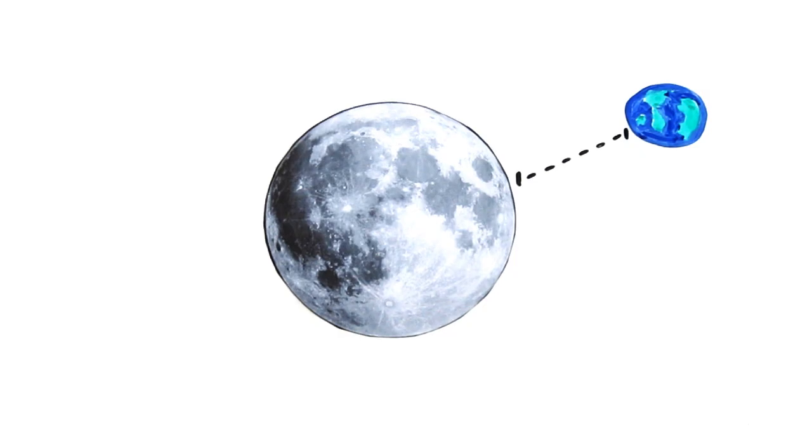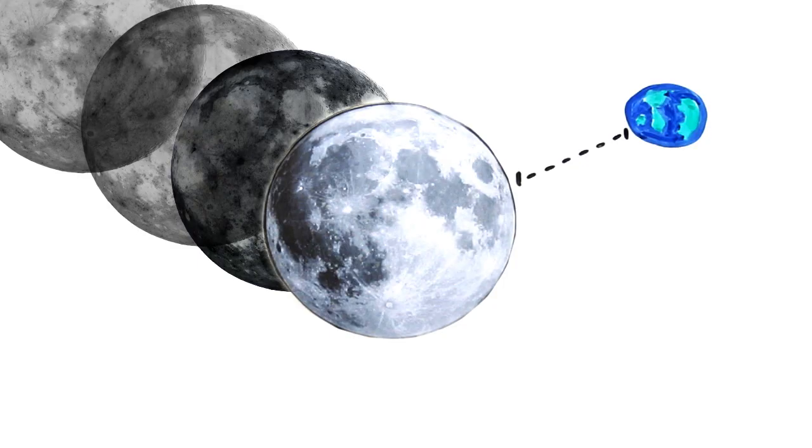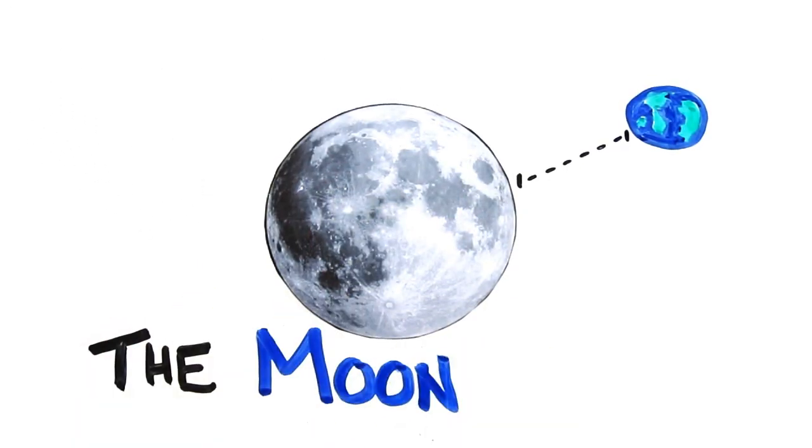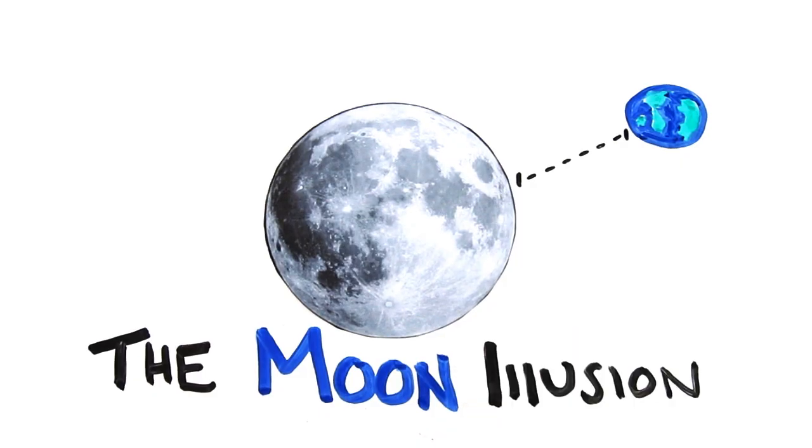But what if I told you that that moon is the exact same size as every other time you've ever seen it in the sky, and it was in fact playing a trick on your brain? It's called the moon illusion, though an explanation of this optical phenomenon is still debated.